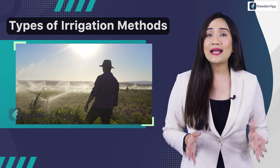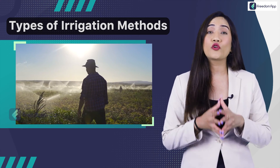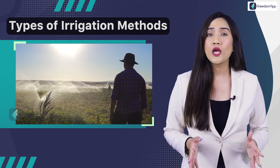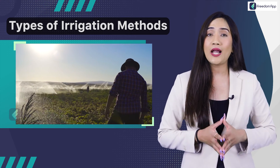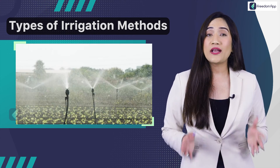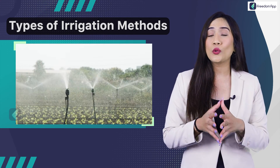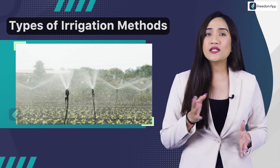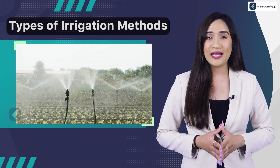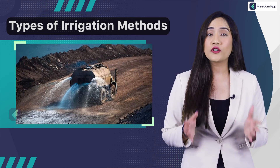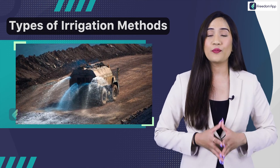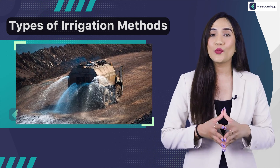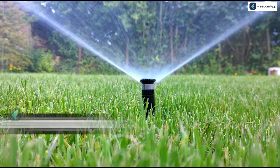Irrigation also has effects on crop production, which includes protecting plants against frost, suppressing weed growth in grain fields, preventing soil consolidation, and aiding in dust separation and disposal of sewage and mining.